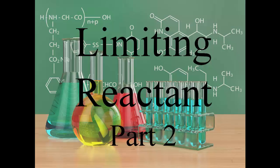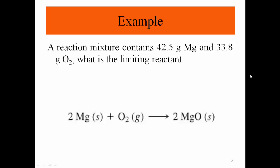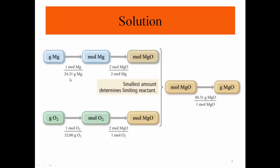In the second part of limiting reactant, let's have some more examples. Here we have a reaction mixture that contains 42.5 grams of magnesium and 33.8 grams of oxygen. What is the limiting reactant? The chemical reaction is 2Mg + O₂ → 2MgO, and these are the amounts available.